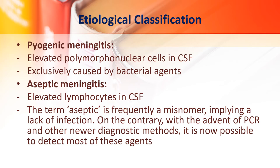The most common one is pyogenic meningitis. There is elevated polymorphonuclear cells — mostly neutrophils — in the CSF, and it is caused by bacterial agents. The second is aseptic meningitis, where there is elevation of lymphocyte number in the CSF. The term aseptic is not fully suitable but is still used. Classically it should mean no infection, but there is infection and agents are identified by various newer methods like PCR.